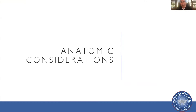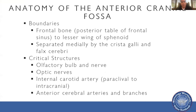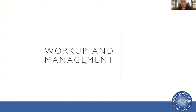Anatomic considerations: the boundaries of the anterior cranial fossa go from the frontal bone, the posterior wall of the frontal sinus, to the lesser wing of the sphenoid. It's separated immediately by the crista galli and falx cerebri, and of course it contains many critical structures, including the olfactory bulb and nerve, the optic nerves, the internal carotid arteries, and the anterior cerebral arteries and branches.